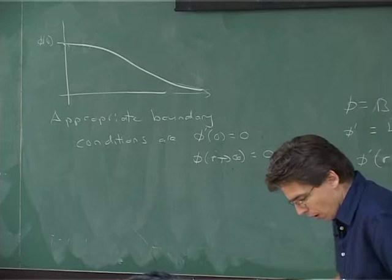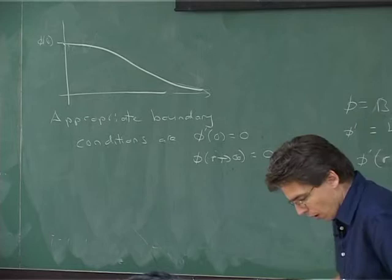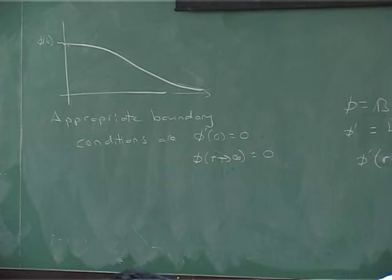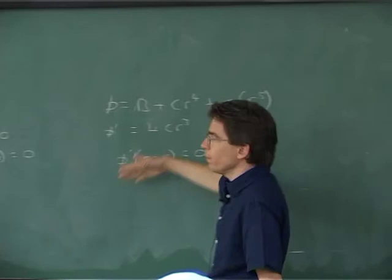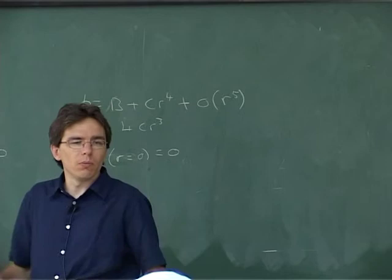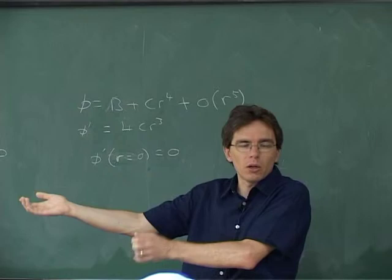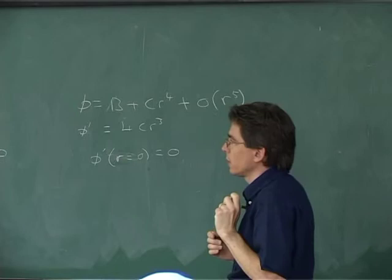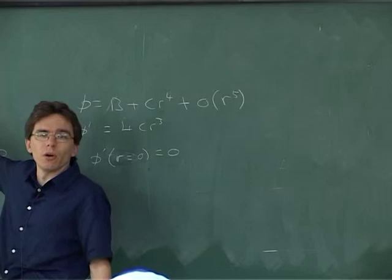Another student asks about the coefficient of one-over-r. By imposing the Neumann condition at the origin, we've eliminated the one-over-r piece near r equals zero. The solution is determined up to a constant and a one-over-r term. The constant is fixed by requiring the solution goes to zero at infinity. You can always shift the solution up or down by a constant, or add a constant-over-r to get another valid solution of the homogeneous equation.